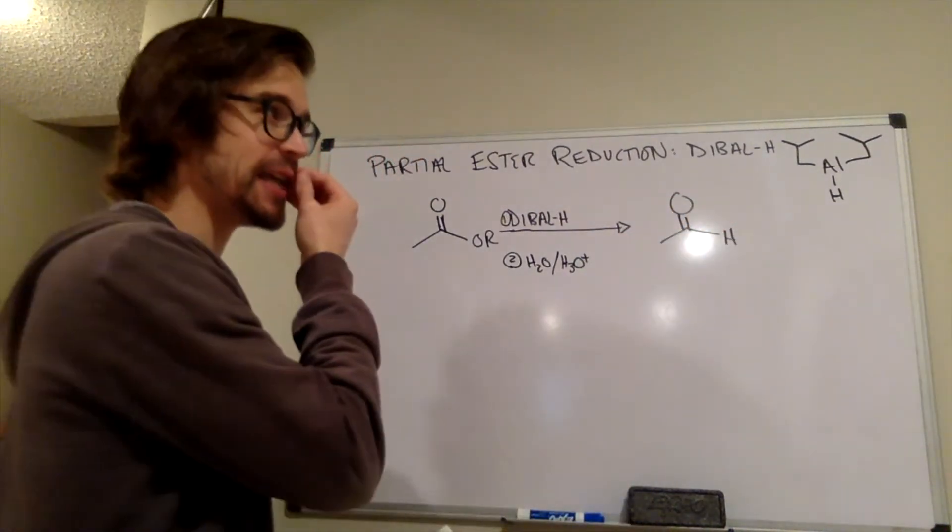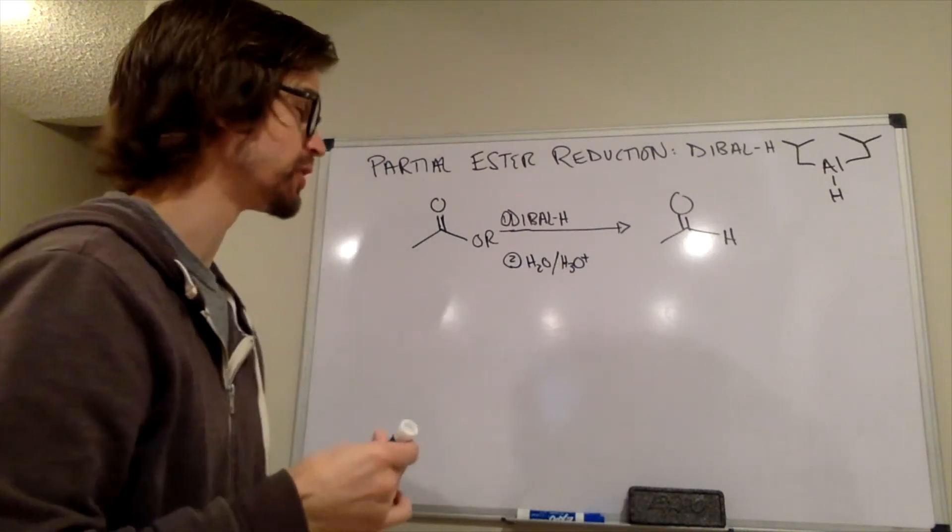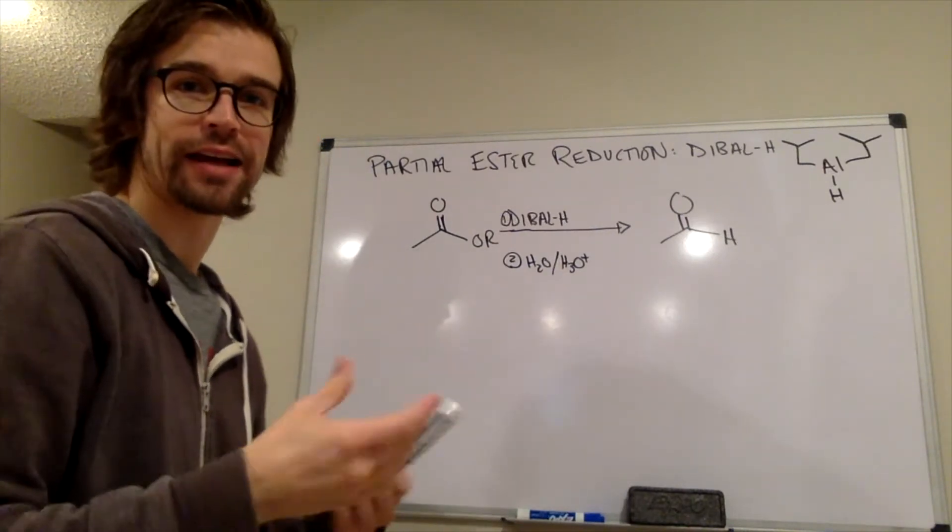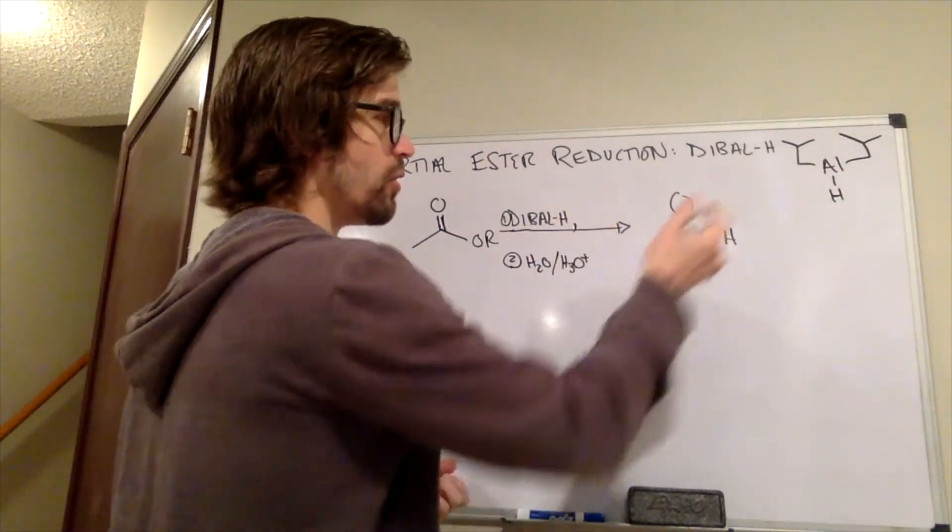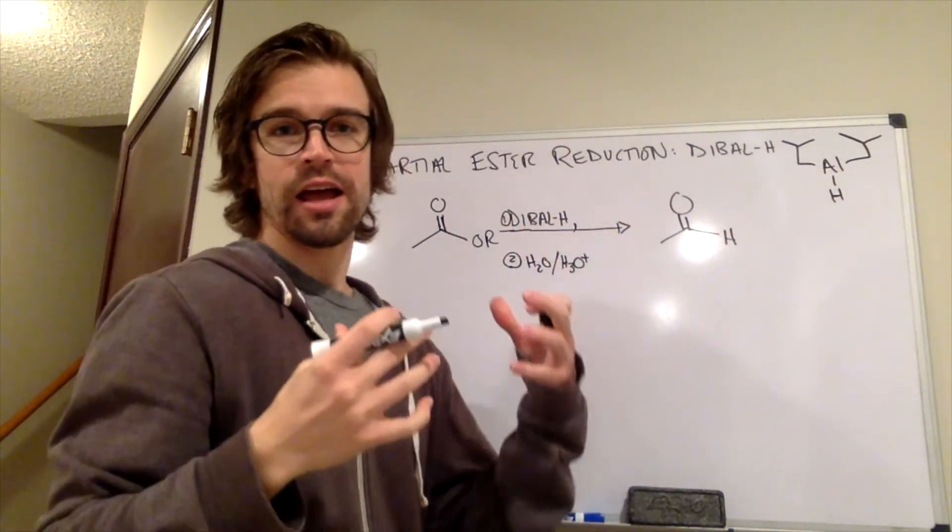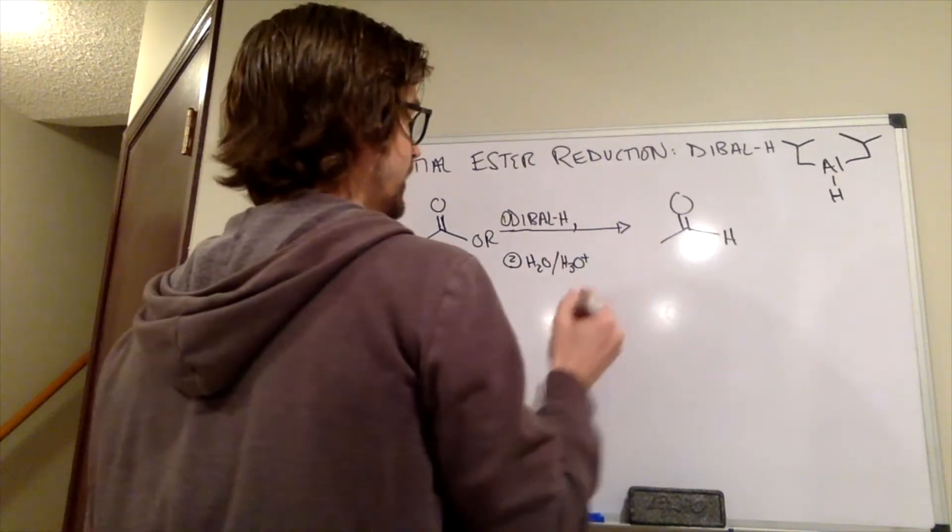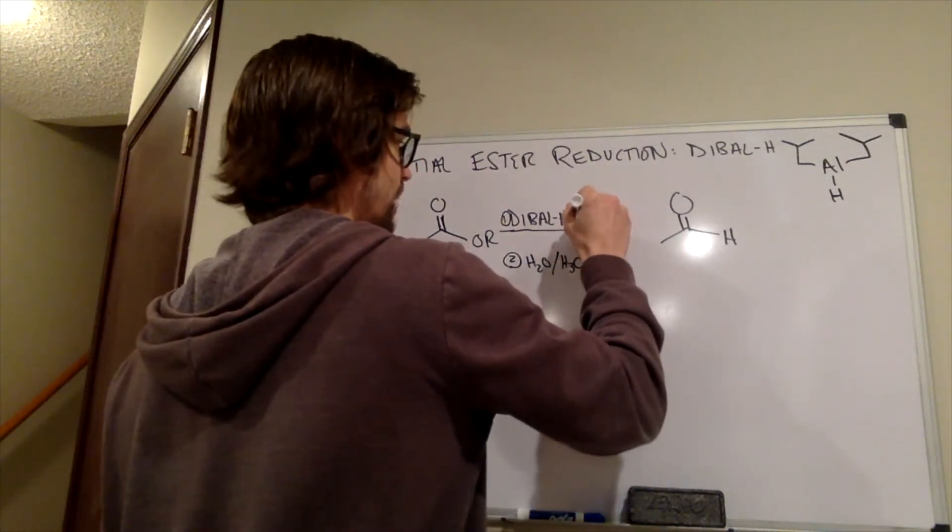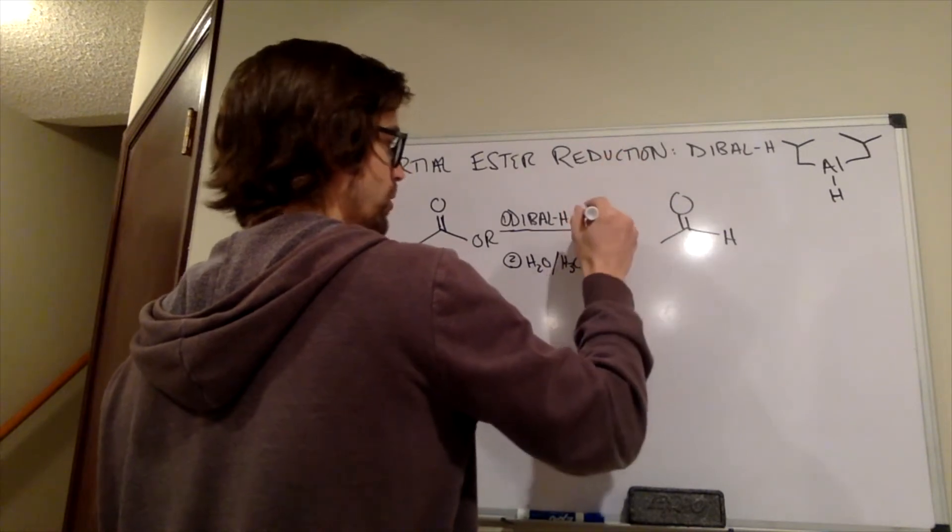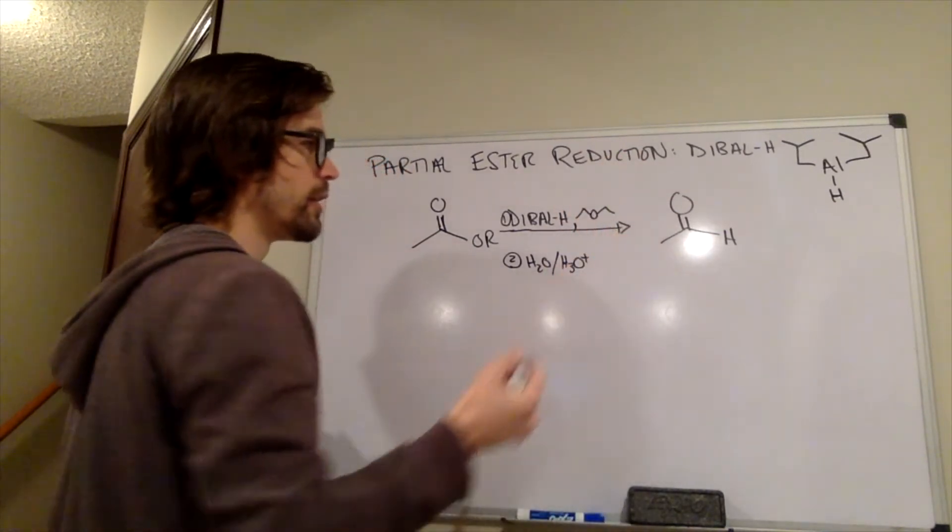So dibal-H is a reagent that will do this partial reduction. As long as a few things are observed, we still need our aprotic solvent because this is still a really strong reducing agent. It can just act as a base. So we have to have an aprotic solvent like diethyl ether or tetrahydrofuran. So we'll draw our diethyl ether in there.